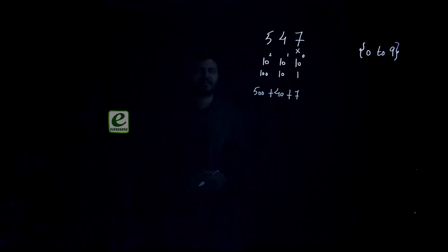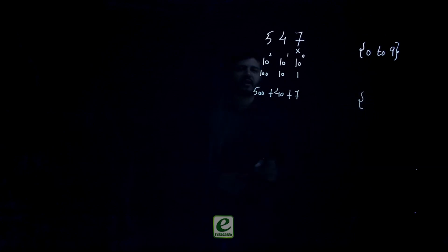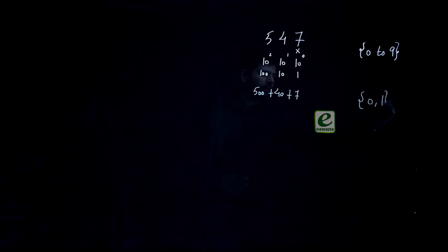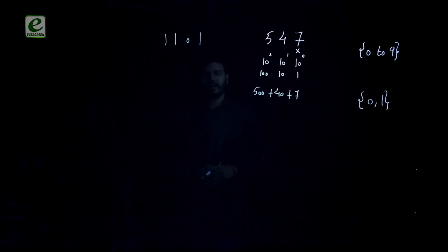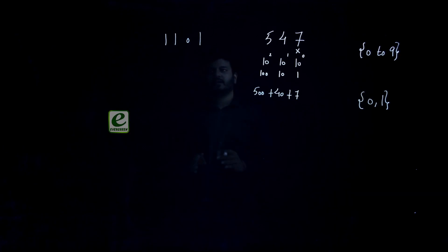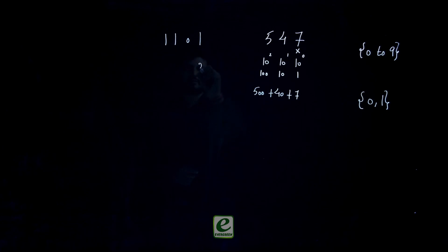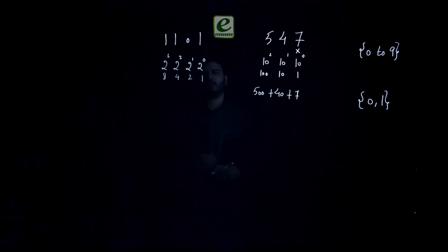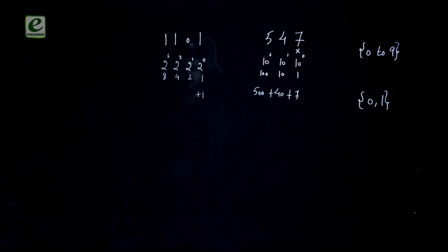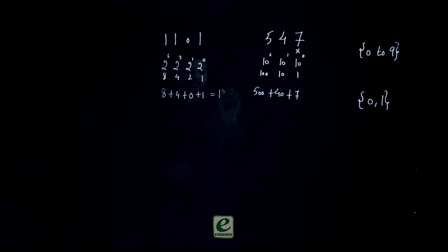In binary, the only possible values are 0 and 1, so the base is 2. For example, take binary number 1101 — treating it as a positive number. Positions are 2 raised to power 0 = 1, power 1 = 2, power 2 = 4, power 3 = 8. So: 1×1 = 1, 0×2 = 0, 1×4 = 4, 1×8 = 8. The total value is 13.